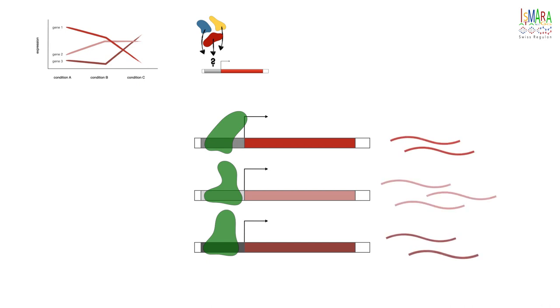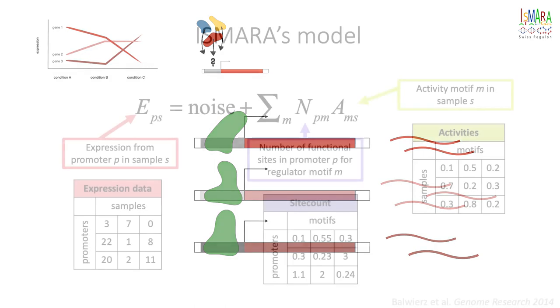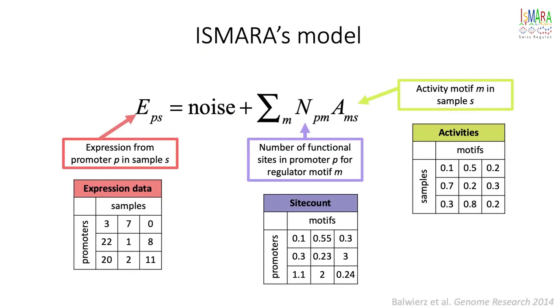To do this, ISMARA models gene expression in terms of transcription factor binding sites and activities of transcription factors using a linear model illustrated here. There are two inputs to the model.